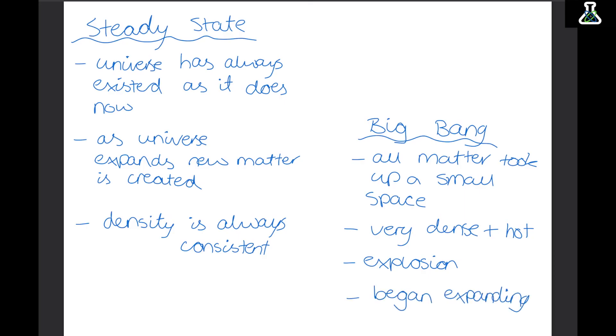Now we can use redshift to describe both theories, as both theories say the universe is expanding. But we have some evidence that only backs up the big bang theory. And this is CMB radiation, which has been detected in the universe to suggest that the universe was once really hot and dense. So this piece of evidence is why the big bang theory is the current accepted theory for the creation of the universe.